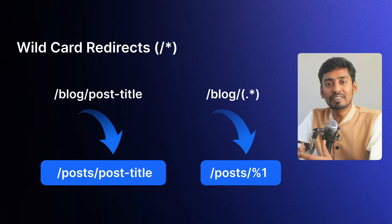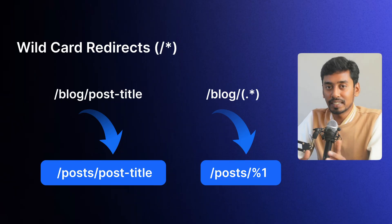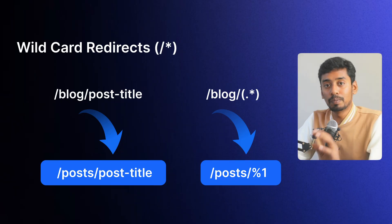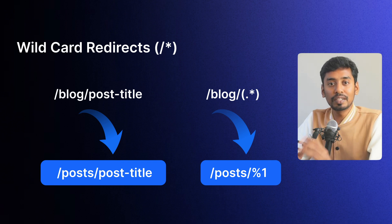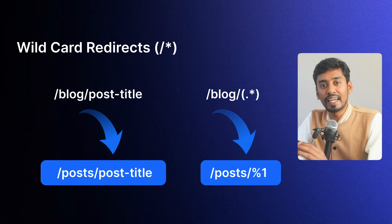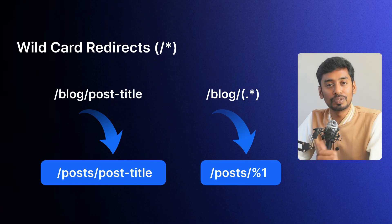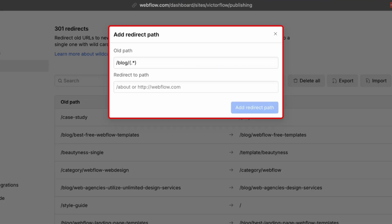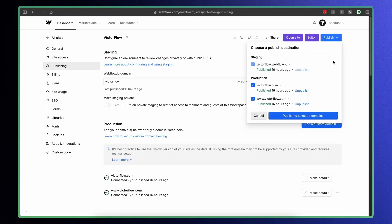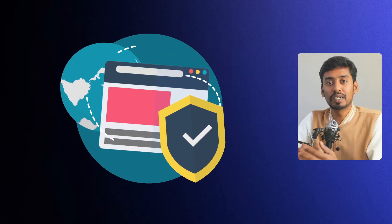One bonus tip: when you're dealing with pages that have a consistent structure — like transitioning from /blog/post-title to /post/post-title — you can use wildcard redirects in Webflow and Framer, because these URLs are categorized as dynamic URLs. Manually handling hundreds of individual blog post redirects is impractical. Instead, just add /* at the end of the old URL and redirect it to the new structure. This saves you from the hassle of setting up hundreds of separate CMS page redirects.